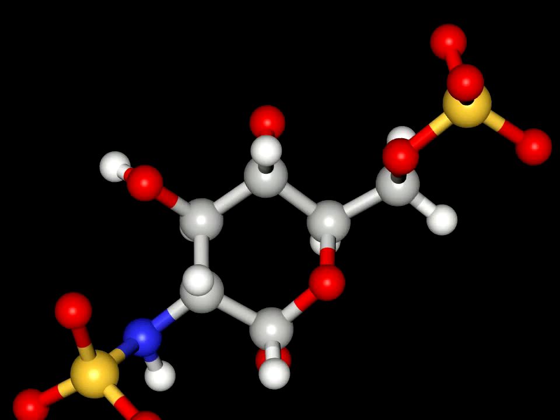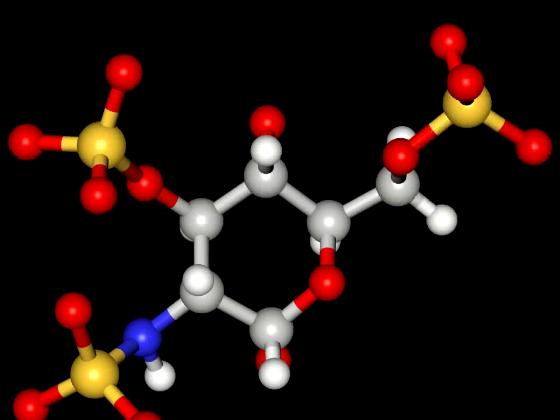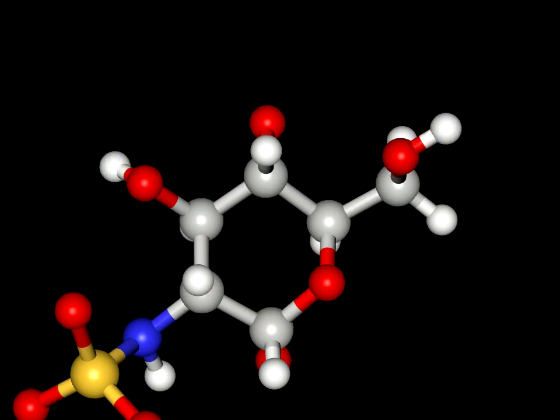Returning now to the original N-sulfated form, we will take a closer look at the O-sulfation possibilities for this residue. This particular residue has O-sulfation on the number 6 carbon. Also possible is the 3O sulfation alone. A rare combination is the one shown now. It has the N-sulfation shown previously, along with 3 and 6 O-sulfation. While this combination is rare, it is one of the key requirements for binding with antithrombin-3 and the basis for the anticoagulation drug, Arixtra.